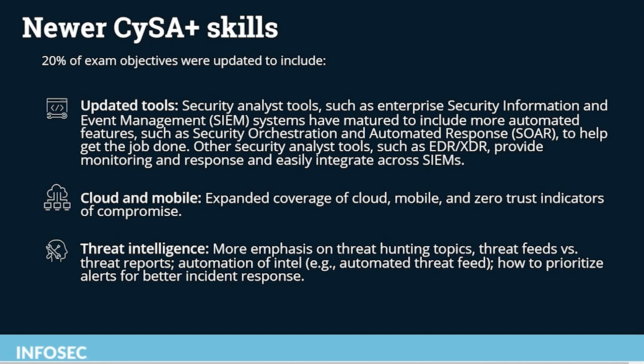Next is cloud and mobile. There's expanded coverage of cloud, mobile, and zero trust indicators of compromise. As businesses move into the cloud and begin using zero trust architectures, security analysts just have different indicators of compromise to be familiar with in their SIEM. As we look at different network architectures, the indicators of compromise are going to look slightly different, so we have to be familiar with those in the different environments.